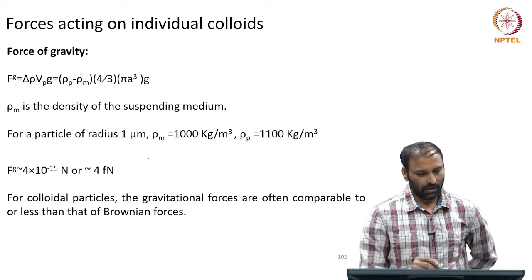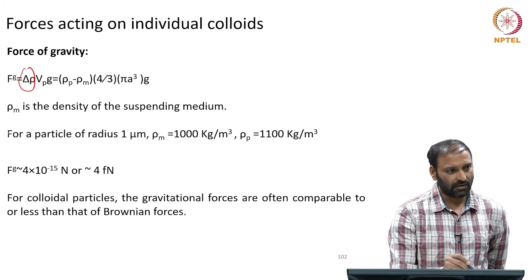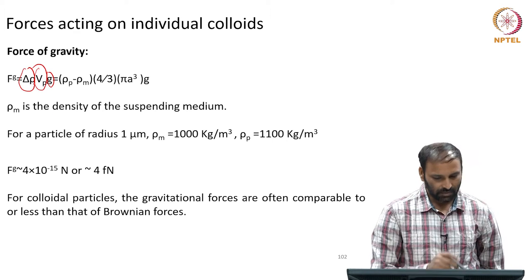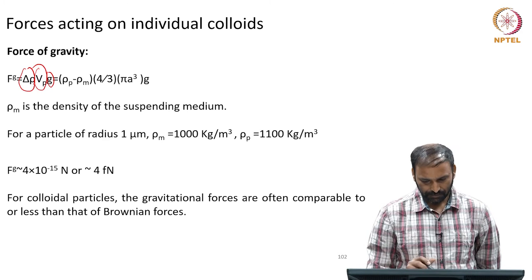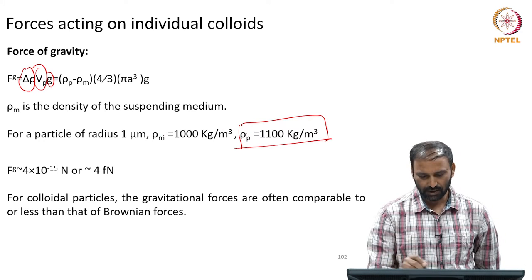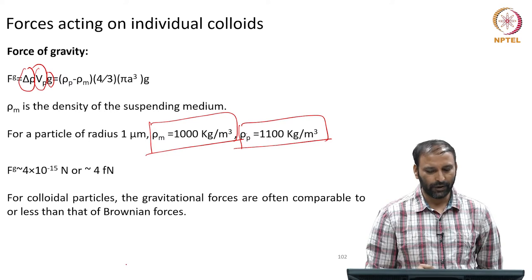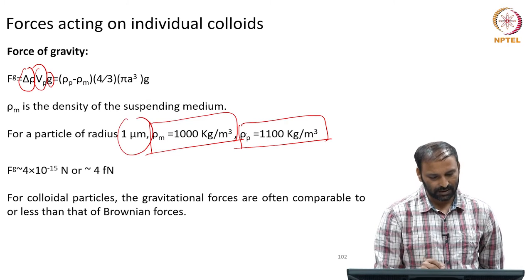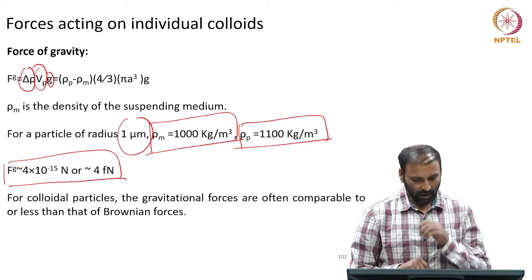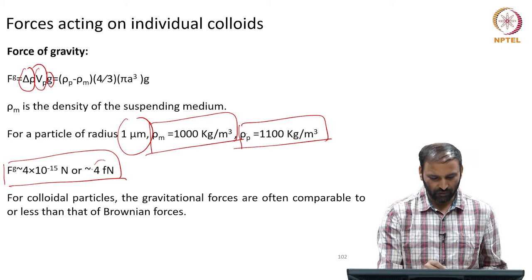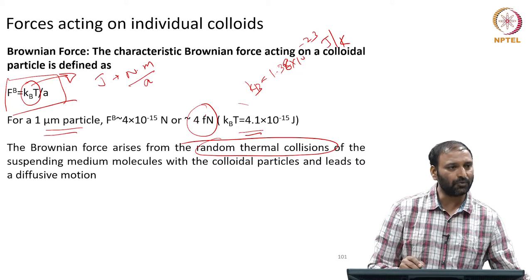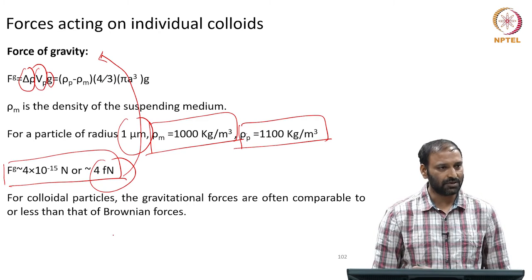The gravitational force is the density difference multiplied by the volume of the particle multiplied by g. With typical numbers — particle density ~1100 kg/m³, fluid density ~1000 kg/m³, and 1 micrometer particles — F_g is of the order of 4 femtonewtons. Notably, this is very much comparable to the 4 femtonewtons obtained for the Brownian force.